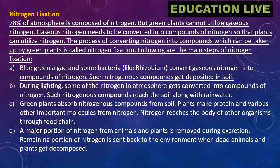(c) Green plants absorb nitrogenous compounds from soil. Plants make protein and various other important molecules from nitrogen. Nitrogen reaches the bodies of other organisms through the food chain. (d) A major portion of nitrogen from animals and plants is removed during excretion. The remaining portion of nitrogen is sent back to the environment when dead animals and plants get decomposed.